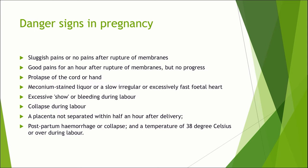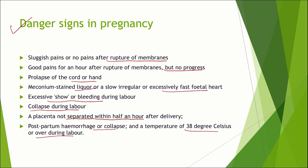The next common question is: what are all the danger signs in pregnancy? Sluggish pains or no pains after rupture of the membrane; good pains for an hour after rupture of the membrane but no progress of labour; prolapse of cord or hand; meconium-stained liquor; slow, irregular, or excessively fast fetal heart; excessive show or bleeding during labour; collapse during labour; placenta not separated within half an hour after delivery; postpartum hemorrhage or collapse; and a temperature of 38 degrees Celsius or over during labour — all will be considered as danger signs in pregnancy.